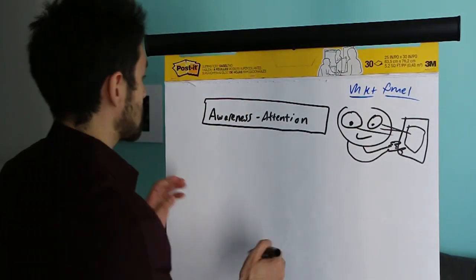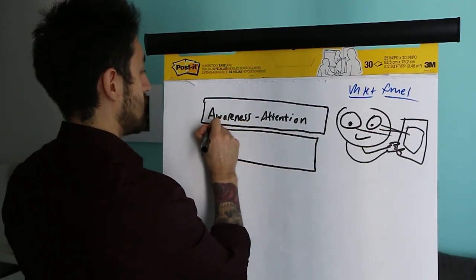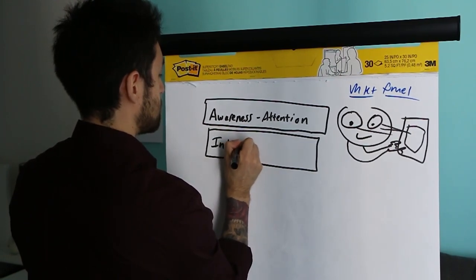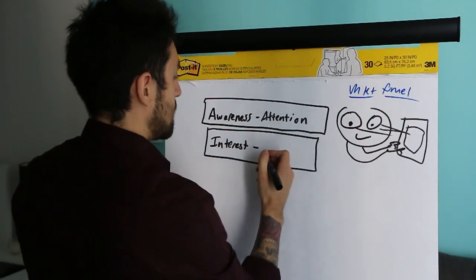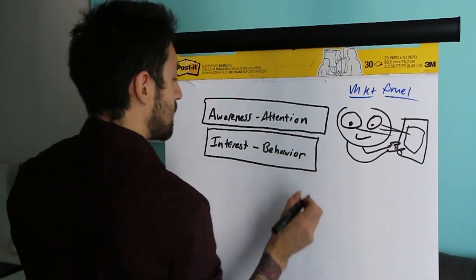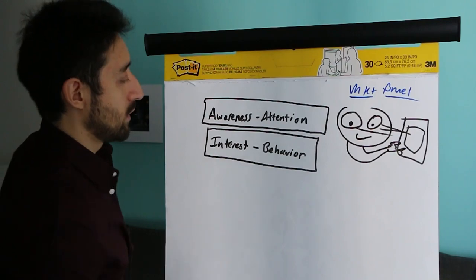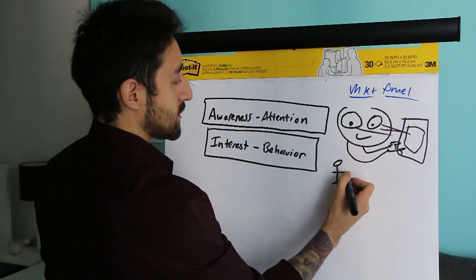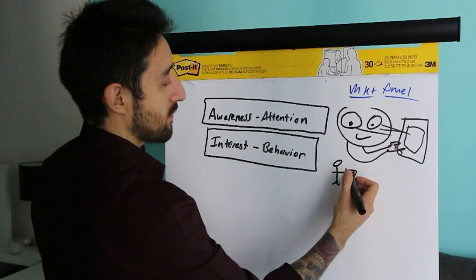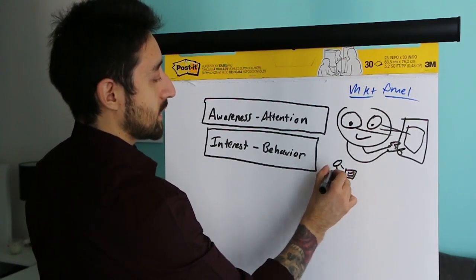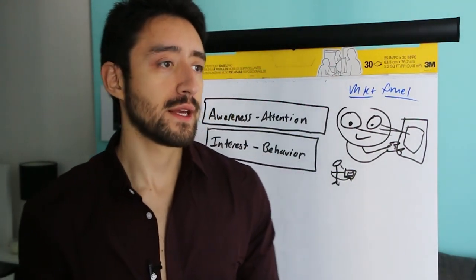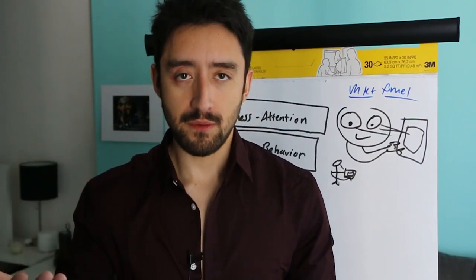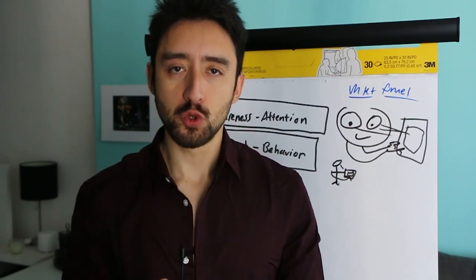The second piece of the marketing puzzle is actually more important than getting attention. The next piece is what's called interest. Interest is almost always quantified in some kind of behavior. In this example, our person is in line at Starbucks, looking at his phone, and decides to click a link — he goes somewhere, maybe fills out a form, requests more information, or calls someone. When you have someone's interest, they tend to show you that through some kind of behavior.